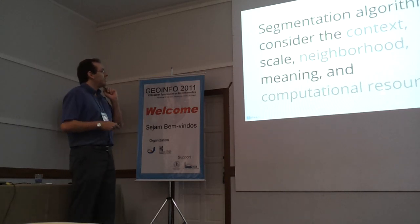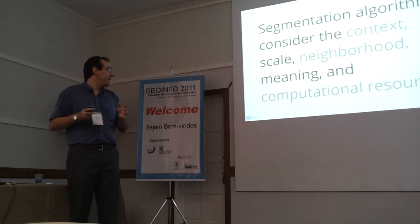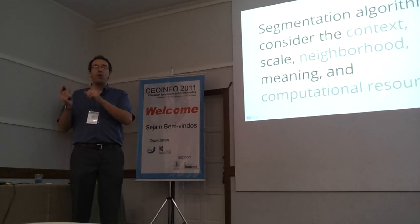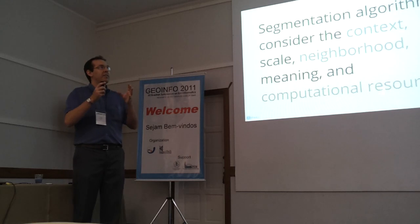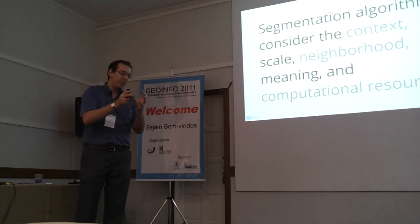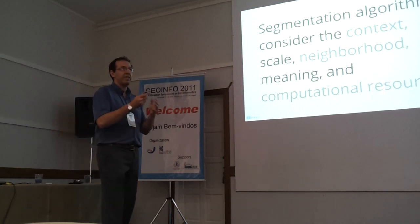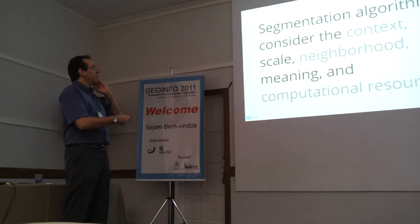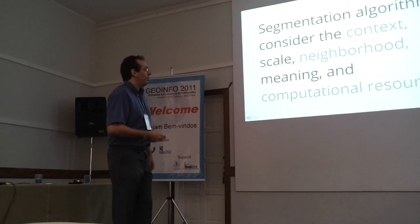We also need to consider scale and neighborhood. The concept of neighborhood is widely used in GEOBIA, because one of the key properties when linking objects is understanding how a given polygon relates to its neighbors. We can make inferences considering these neighbors and assign meaning to each polygon.